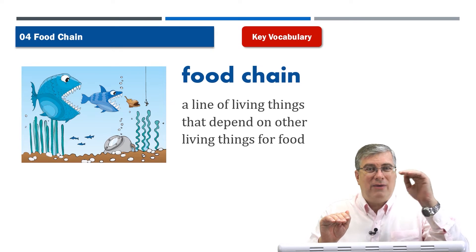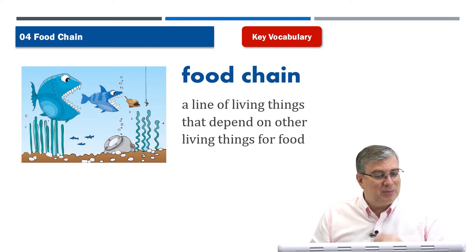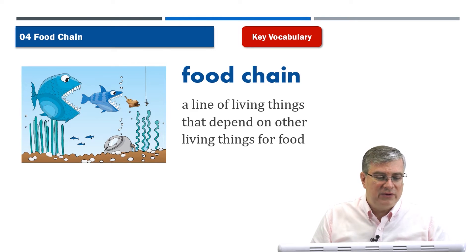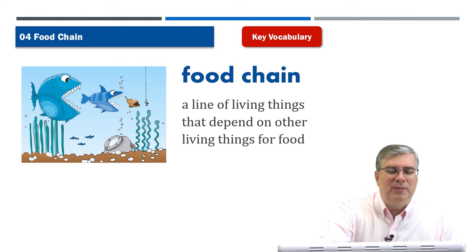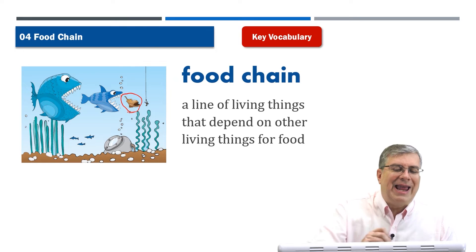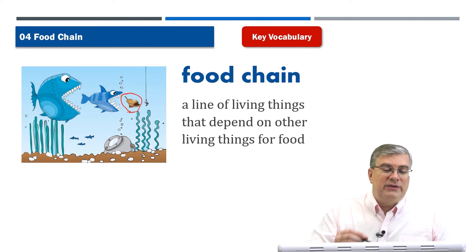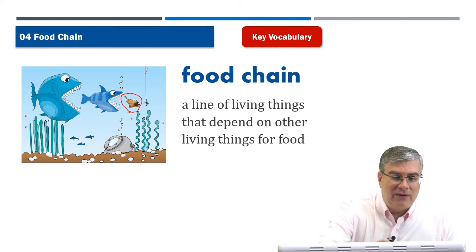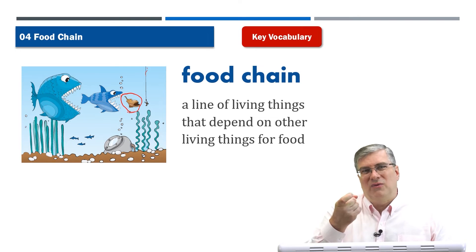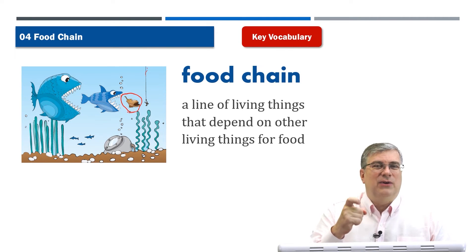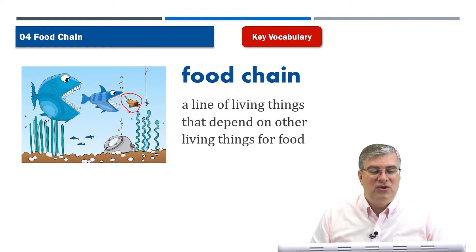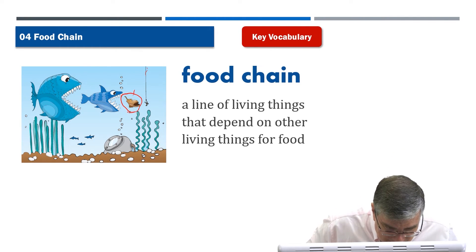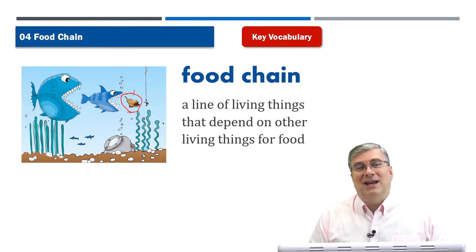We have animals low on the food chain and animals high on the food chain. Here's an interesting cartoon picture — it's kind of a joke. You can see a fishing line with a worm on the hook. A worm is very small and weak, so it's at the bottom of the food chain. Then a fish will come and eat the worm, and a bigger fish will eat the smaller fish, so the bigger fish are higher on the food chain. But there's something strange circled here — it looks like an old boot, which is a fisherman's joke.